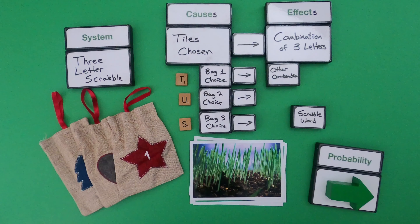For the next system, I've got a simple game called Three-Letter Scrabble. I have three bags: bag one, two, and three. Bags one and three have consonants in them — R, S, T, L, and N. And then bag two has vowels — A, E, I, O, U. All you do is choose a letter from bag one. I get the letter T. Then choose a letter from bag two. I get the letter A. Then choose a letter from bag three. I get the letter L.